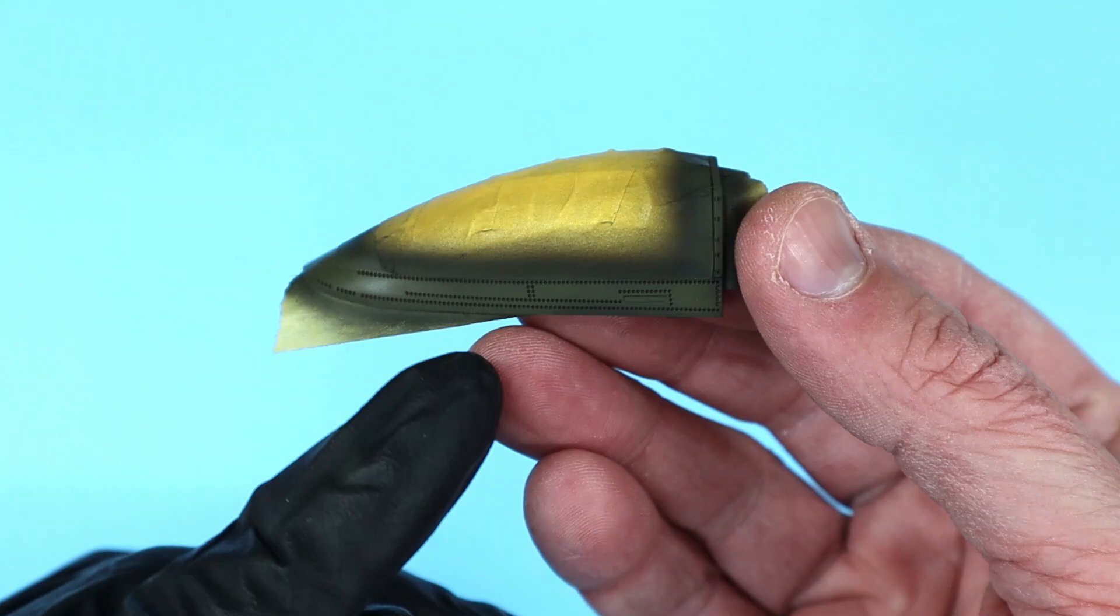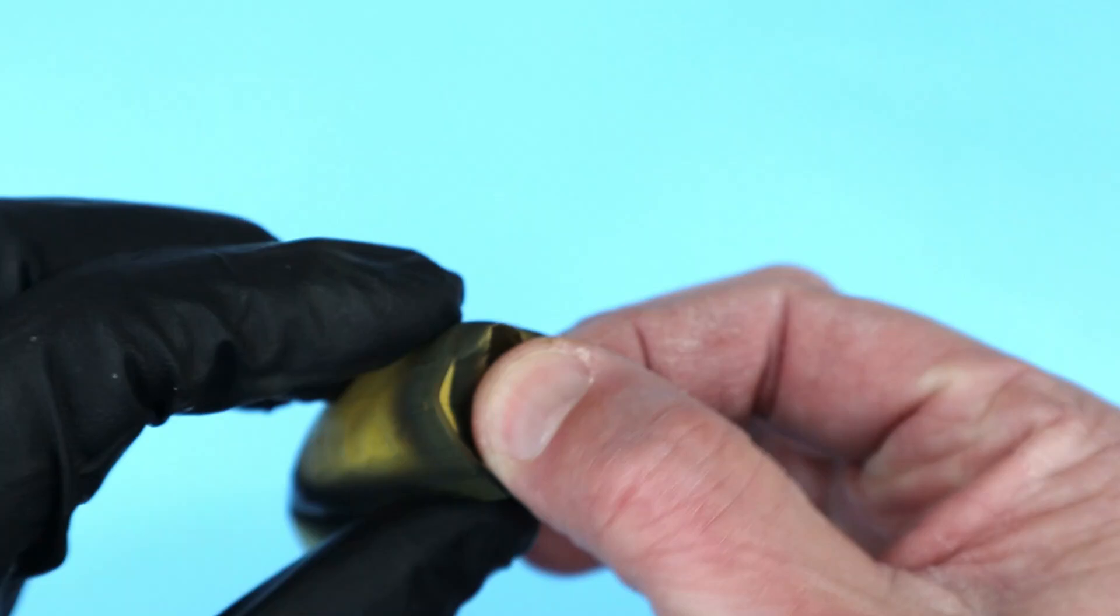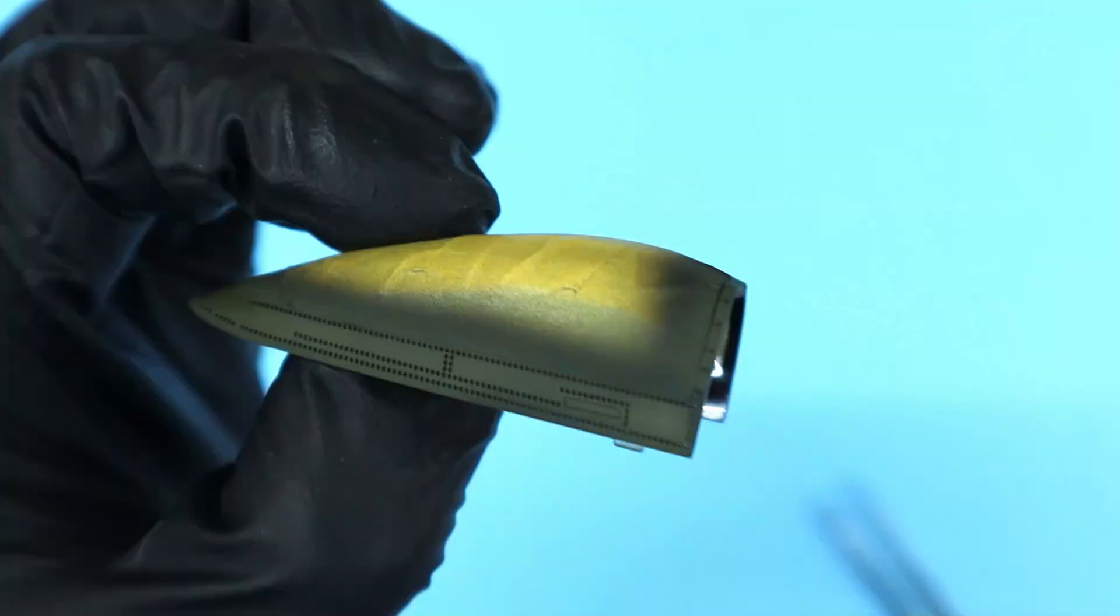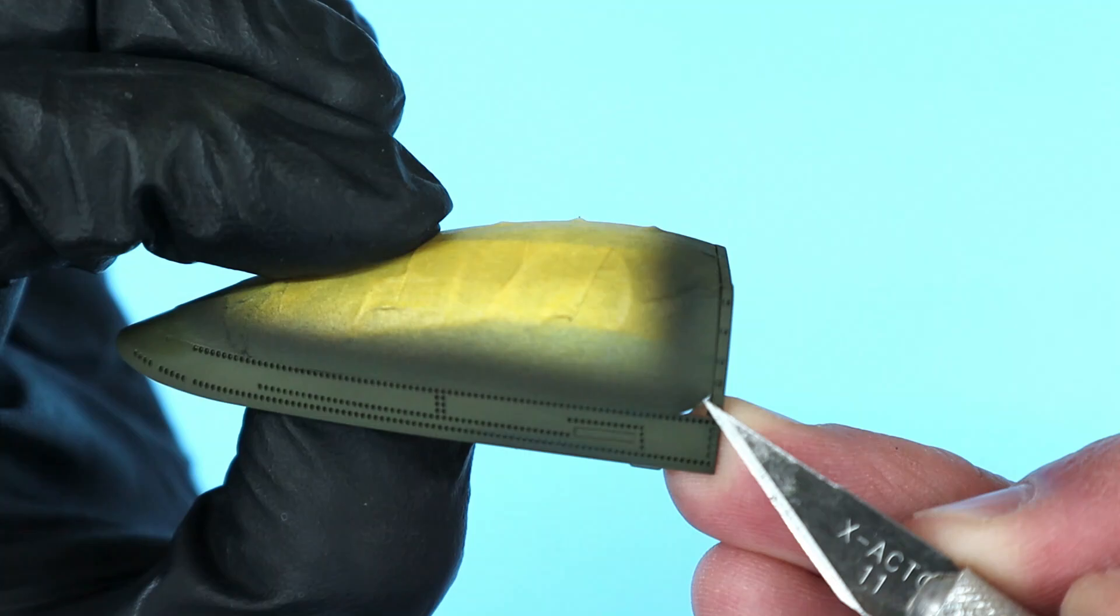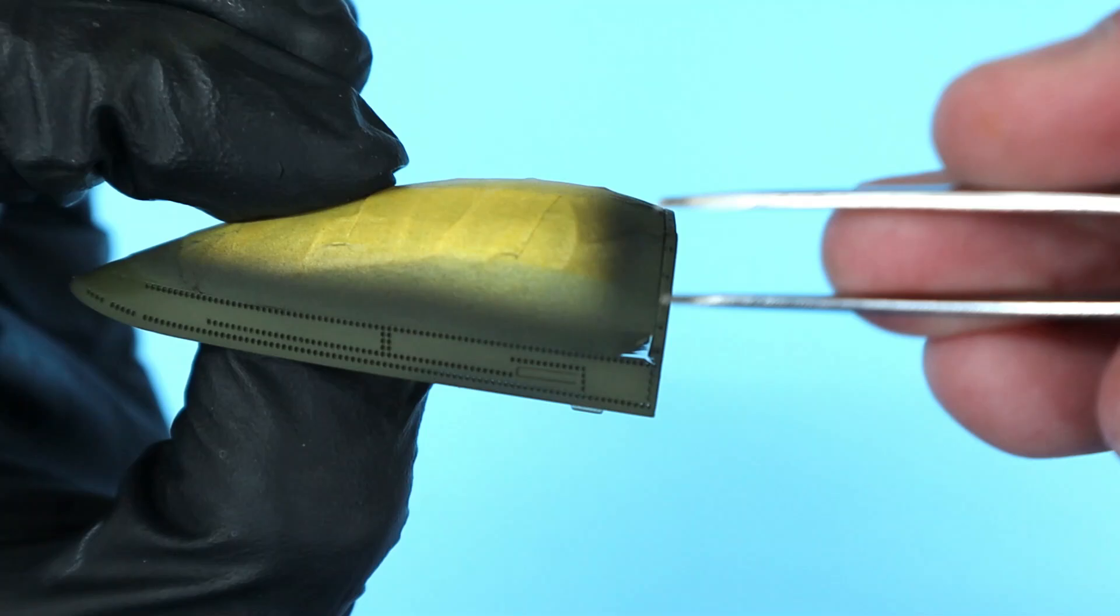Once dry, or in this case near dry or dry enough, I simply remove the canopy masks. I use an exacto knife to lift a corner and then with tweezers and later my fingers just pull the tape off one section at a time.